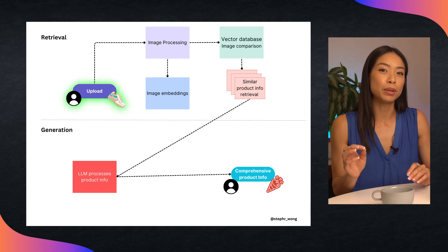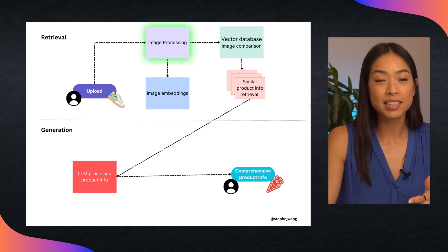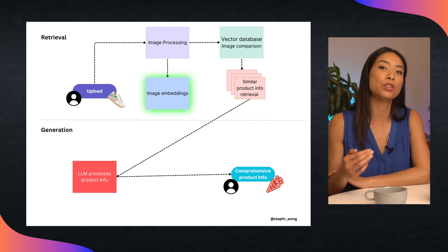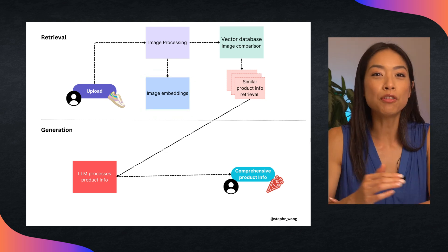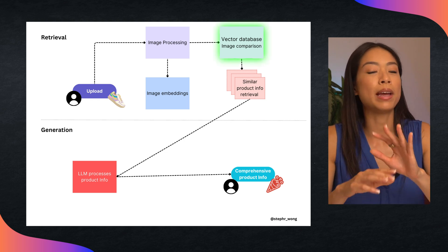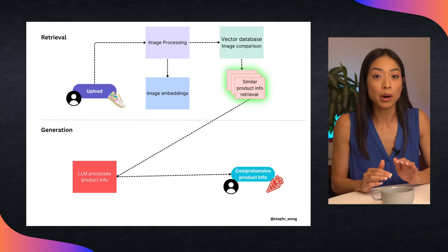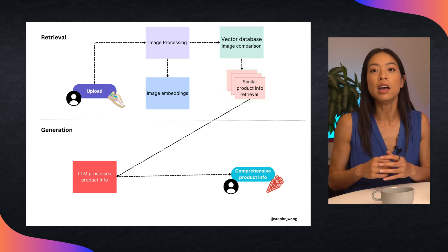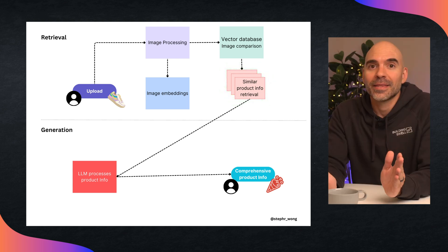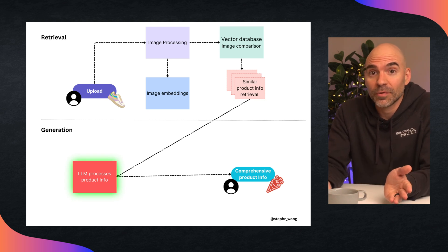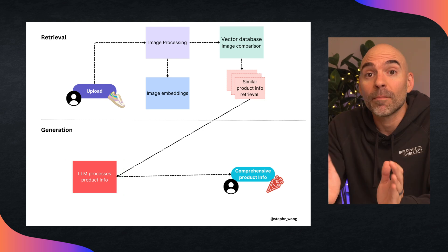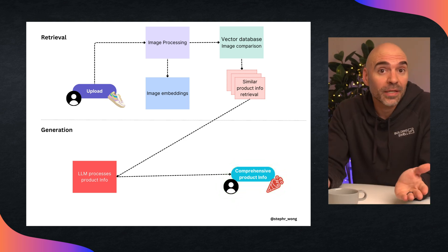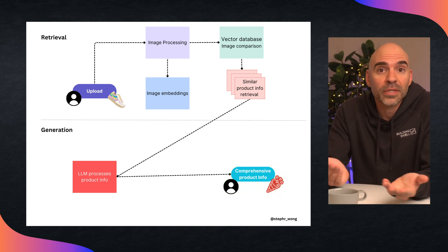For image processing, the user uploads an image of a shoe. The image is processed to extract relevant visual features like color, style, and shape, which are then converted into a numerical representation called embeddings. For retrieval, the image embedding is compared to a database of product images and their corresponding embeddings, and similar products are retrieved based on visual similarity. Product information like descriptions, specifications, and prices is then fetched. Finally, a language model processes the retrieved product information and generates a comprehensive product description based on the user's query and the retrieved data.